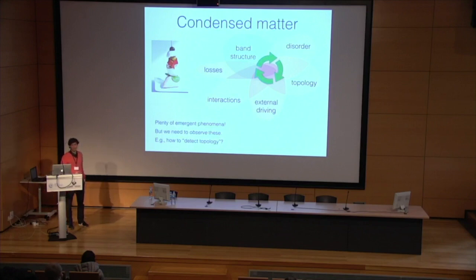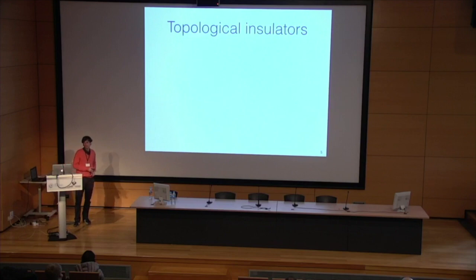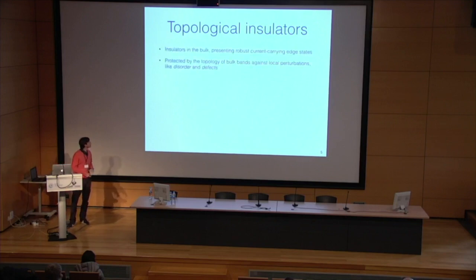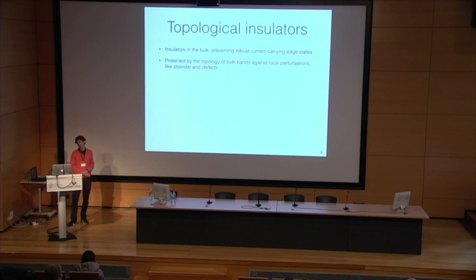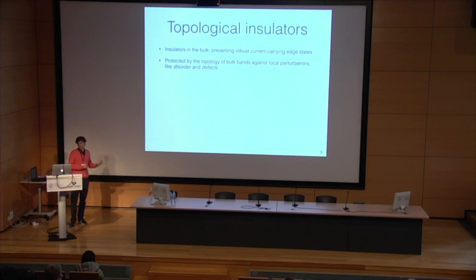One crucial point is how to actually observe these phenomena. In particular for topology — how can we detect it, if there's any way of doing so? Some of you may not be familiar with topology and its present role in condensed matter, so let me give a very brief introduction. Topological insulators are new materials heavily studied in the past 20 to 30 years, which are insulators in the bulk but present robust edge states protected by the topology of the bulk against local perturbations such as disorder or defects.